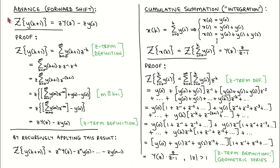On this page, we look at the proofs for two of the Z-Transform properties: the advance and the cumulative summation properties. We will prove the other four properties at a later stage. The advance property calculates how the Z-Transform of a signal changes if the signal is advanced or shifted forward in time. We will prove the case where the signal is advanced by one time step, and it should be clear how to extend it to the general case. The idea of the proof is to apply the Z-Transform definition to the time-shifted signal and then manipulate things until we can isolate the Z-Transform of the unshifted signal.